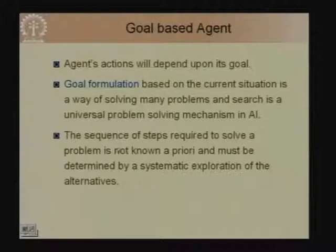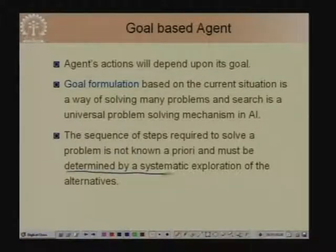In goal based agents, the agent's action depends upon its goals and goal formulation is based on the current situation. Based on its goal and current state, the agent deliberates to decide on the next action. We will look at search and planning — two fields of AI — for deciding what action to take in order to achieve the agent's goals. In goal based agents the sequence of steps to solve a problem is not known a priori and must be determined by systematic exploration of alternative actions.